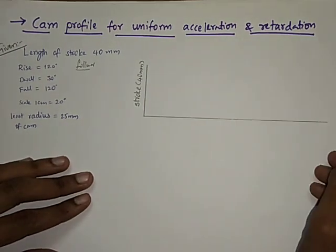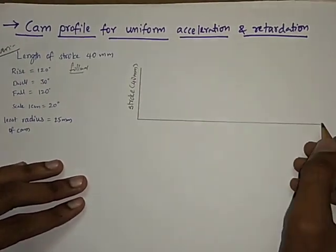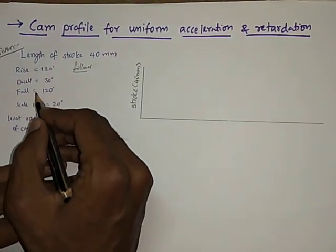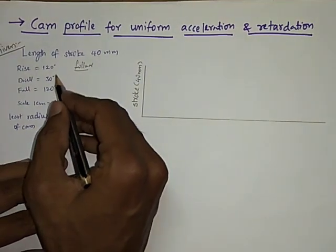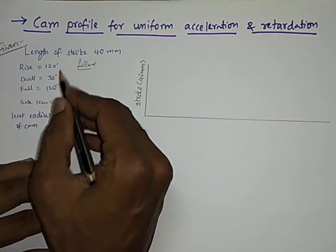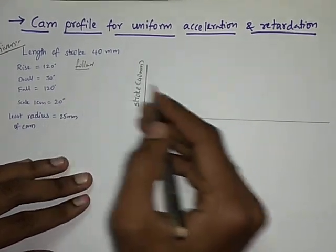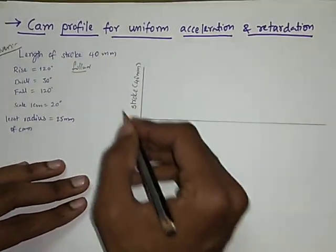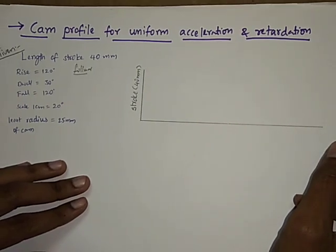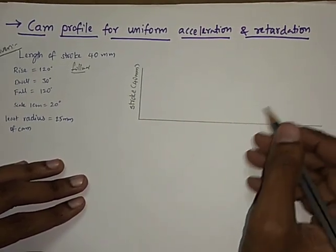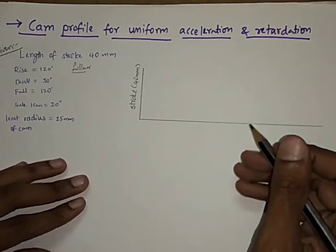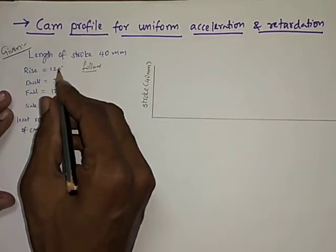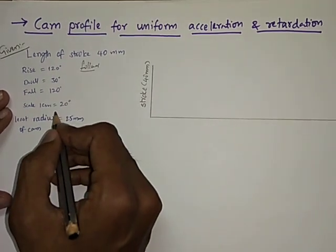First of all, draw the x-axis with some length, and on that x-axis we have to mark rise, dwell, and fall. To mark rise, dwell, and fall — these are given in angles — so convert them into linear dimensions and mark on the x-axis. This diagram is called the displacement diagram, and from the displacement diagram we will draw the cam profile. So first, convert the angles rotated by the cam into linear dimensions.